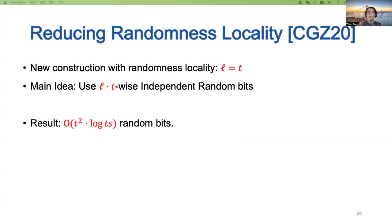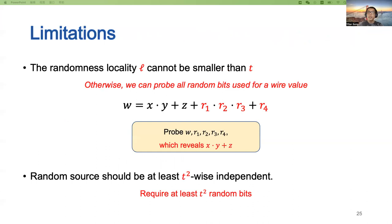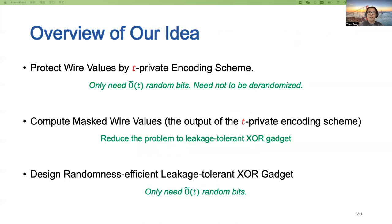A recent work, CGT20, reduces the randomness locality of the basic construction to T, leading to a factor-of-T improvement in randomness complexity. However, this approach appears difficult to beat the T² bound. Intuitively, the randomness locality of a private circuit cannot be smaller than T; otherwise an adversary can probe a wire value and all random bits used for that wire, potentially leaking information about the input. Therefore the random source must be at least T²-wise independent, requiring at least T² random bits.